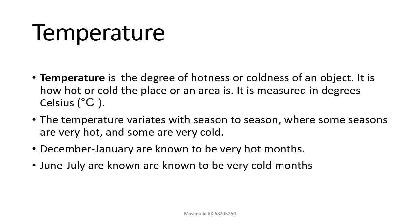The temperature varies from season to season, where some seasons are very hot and some are very cold. We have different seasons: winter, summer, autumn, and spring. We can see changes with these seasons — in winter we see the trees shedding their leaves and so forth. December to January are known to be very hot months, while June and July are known to be very cold months. We even catch colds or flu during the winter seasons — May, June, July.